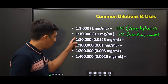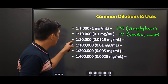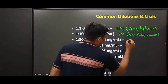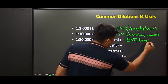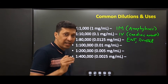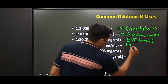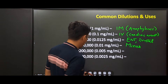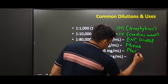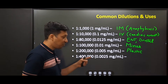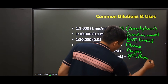All the other dilutions are used for local anesthesia and they are used with lignocaine. One in eighty thousand is used in ENT surgeries and dental surgeries for local anesthesia, where adrenaline is added to minimize bleeding. One in one lakh is used in certain minor surgeries. One in two lakh dilution is used in plastic surgeries. One in four lakh dilution is used in ophthalmic surgeries and microvascular surgeries.